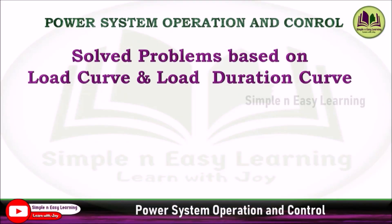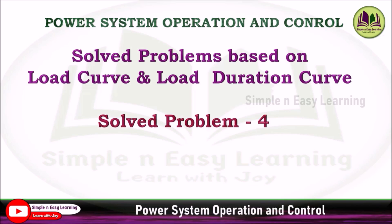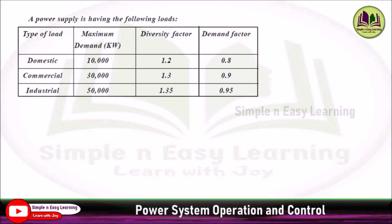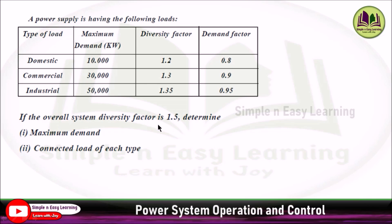Solved problems based on load curve and load duration curve. Problem number 4: a power supply is having the following loads. The type of load is given with maximum demand, diversity factor, and demand factor specified for domestic, commercial, and industrial load. If the overall system diversity factor is 1.5, determine the maximum demand and the connected load of each type.